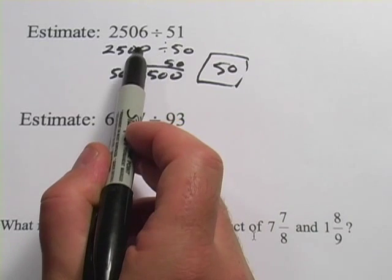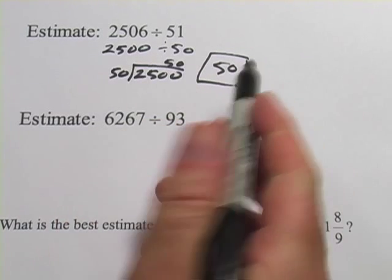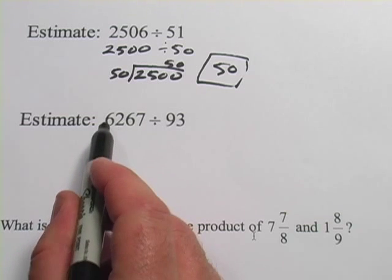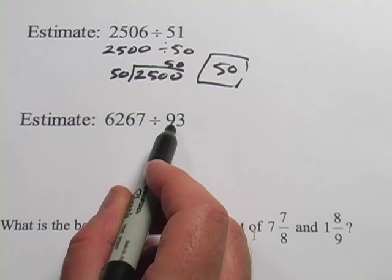If you did it on your calculator, you're going to get something slightly different. Let's try another one of these. We have 6,267 divided by 93.